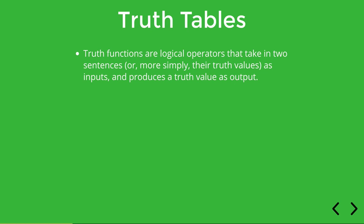As we saw previously, truth functions are logical operators or connectives that take in two sentences, or really just their truth values as inputs, and produce a truth value as output. In a previous video we described the conditions that define the behavior of the truth function AND, and we saw that a sentence with AND is true just in case both of the individual parts that are connected by AND are individually true.